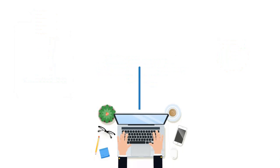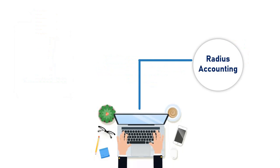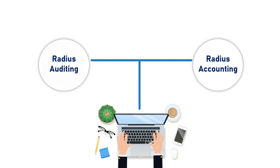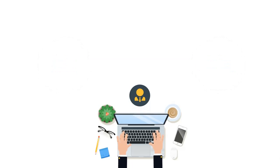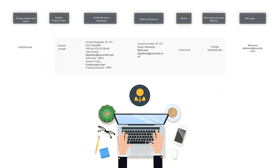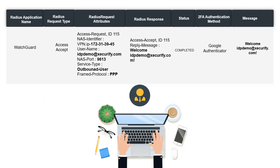Additional features like Radius accounting and Radius auditing are also included in the Mini Orange feature stack. This allows the administrator to keep track of the WatchGuard usage of the users and all of their login events.